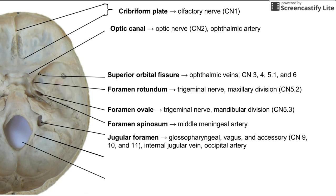That larger one is the jugular foramen, and there are a few things that go through here. You have the glossopharyngeal nerve, the vagus nerve, and the accessory nerve — that's cranial nerves 9, 10, and 11. The occipital artery also goes through it, and the internal jugular vein goes through it as well.